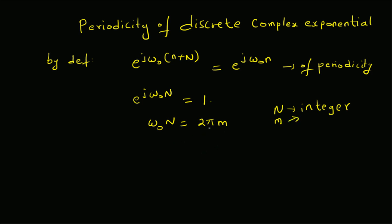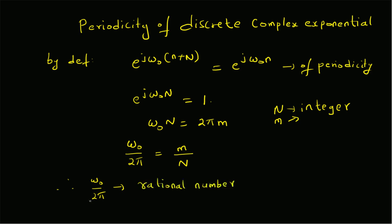So the condition on the frequency is that ω₀/2π should be equal to a rational number — that is, m/N, a ratio of two integers. Therefore, if ω₀/2π is a rational number, in other words if ω₀ is a rational multiple of 2π, then the discrete complex exponential is periodic.